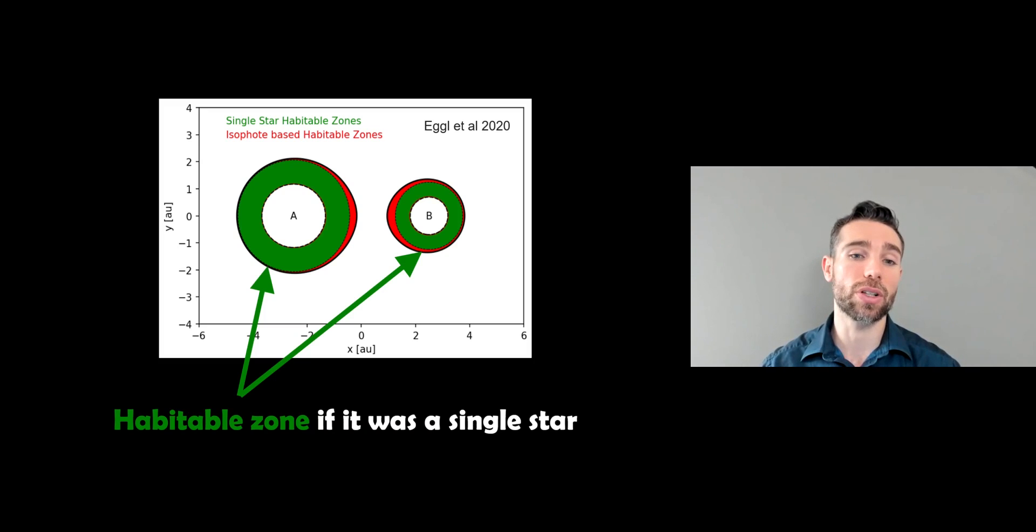So you've got A and B, which are two stars in the centre. You can calculate this zone purely from the individual star with no consideration for the second star. And that's the green zone.